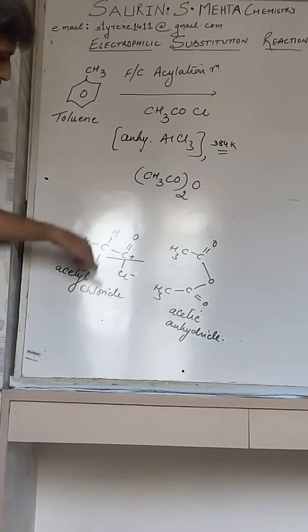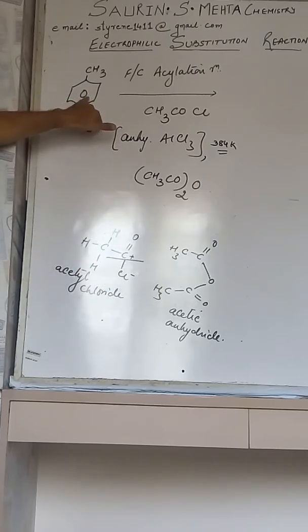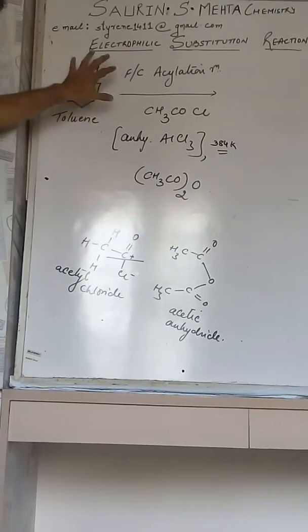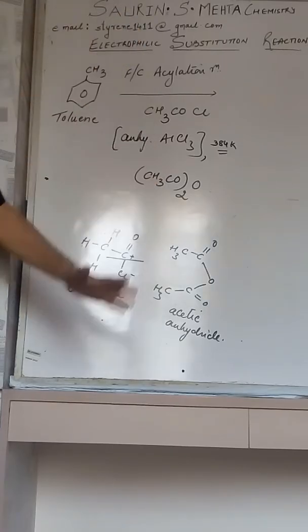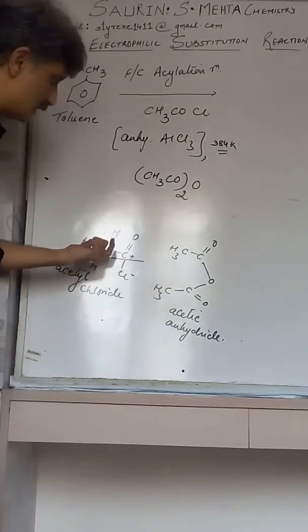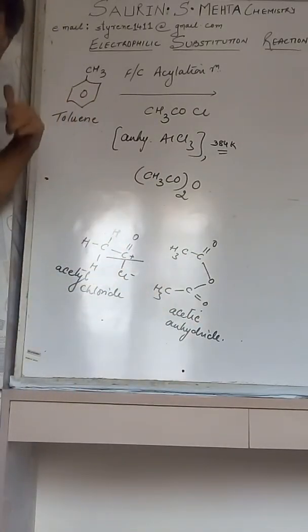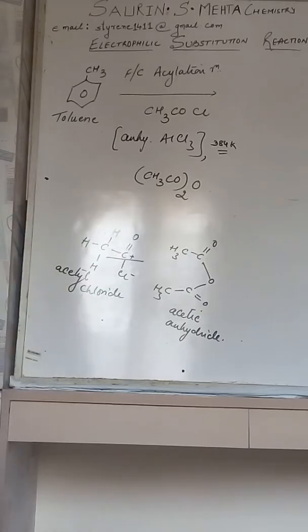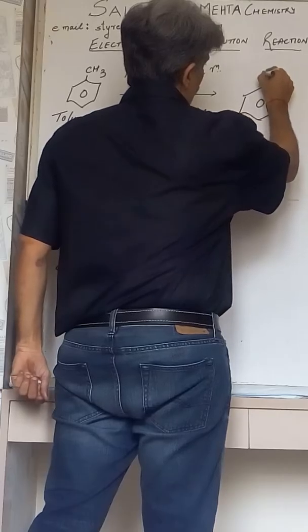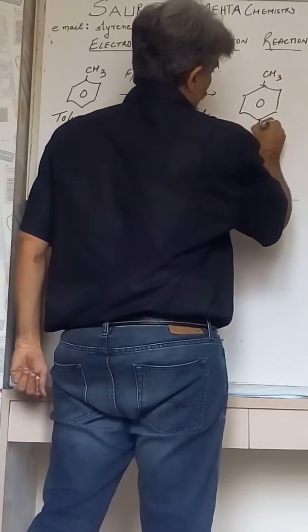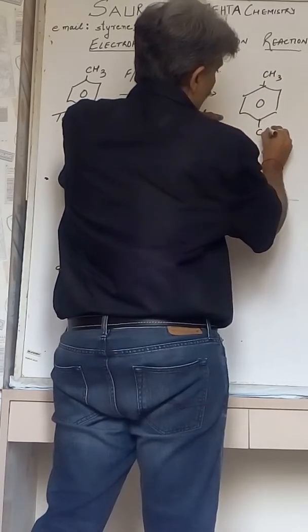Now CH3CO+ gets attracted towards the pi electron cloud of benzene, which is situated above and below its plane. That COCH3 wants to attack the benzene ring, but here the methyl group which is already existing has to direct the COCH3. As you know it is ortho-para directing. This group is willing to get directed accordingly.